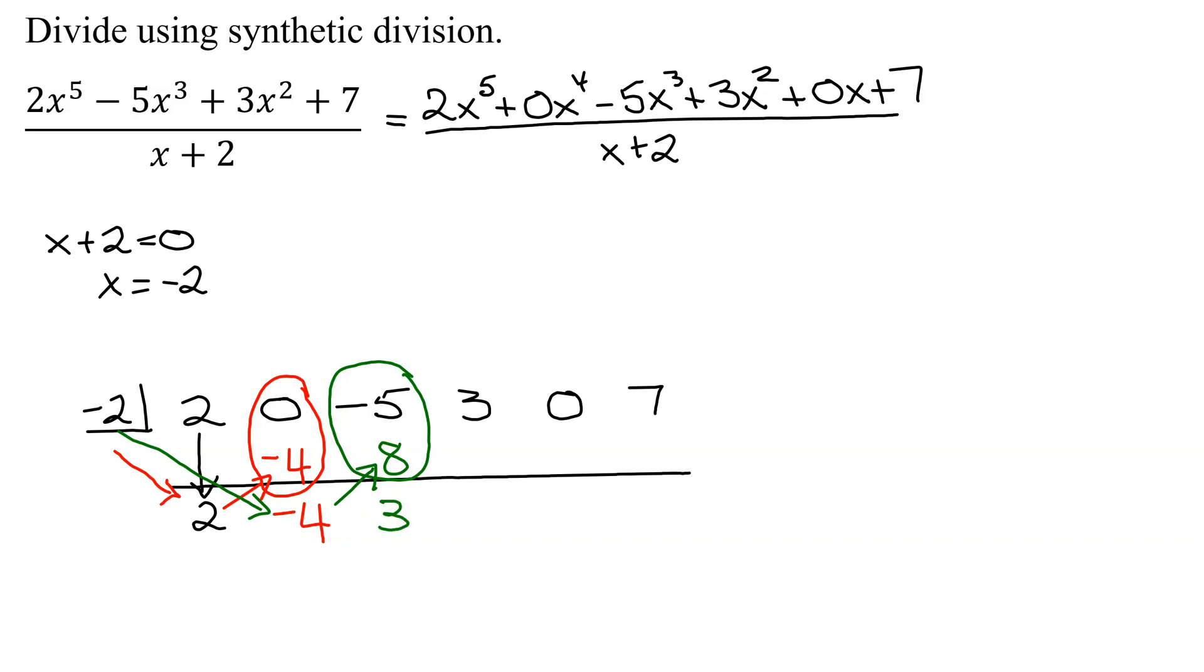I'm not going to write any more arrows, those things would get too confusing. Negative 2 times 3 is negative 6. Add these two numbers: 3 added to negative 6 is negative 3.